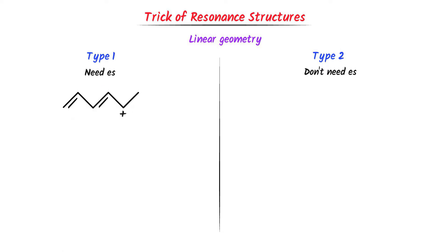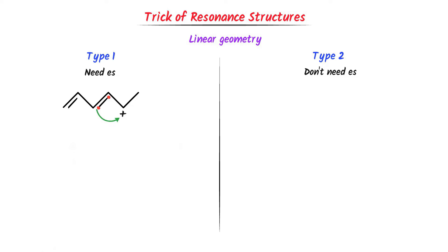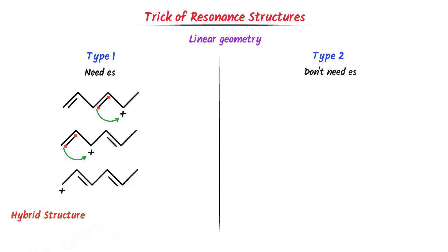Thirdly, consider this structure. The positive sign means it needs electrons. There are pi electrons present in this pi bond. So the pi electron will shift to this carbon, giving this new structure. The electron is lost by the third carbon, so positive charge appears on the third carbon. Also, there is the possibility that these pi electrons shift to this vacant orbital, giving another structure. Here, the electron shifted from the first carbon to the third carbon, so positive charge appears on the first carbon. The hybrid structure includes double bonds at multiple positions. The positive charge is on the first, third, and fifth carbons. There are three resonance structures of this molecule.